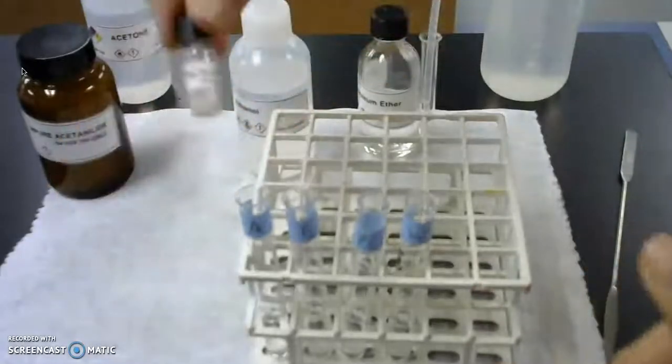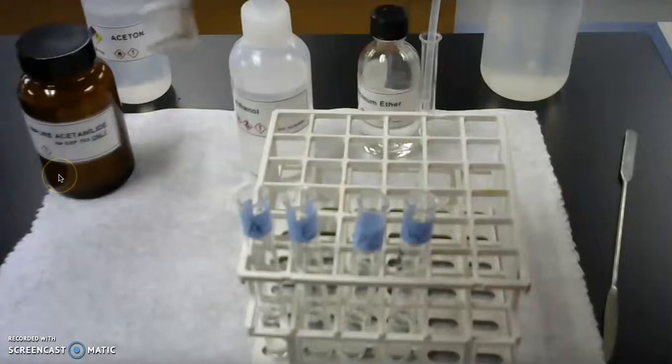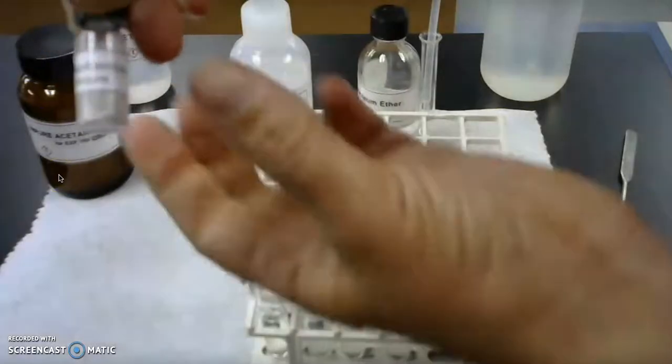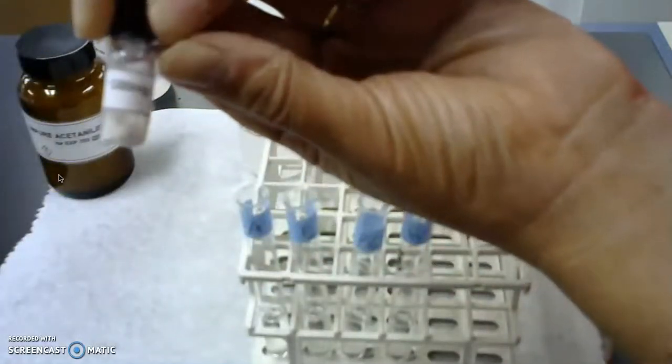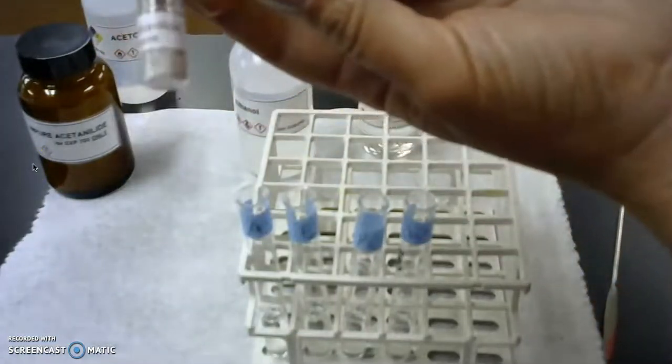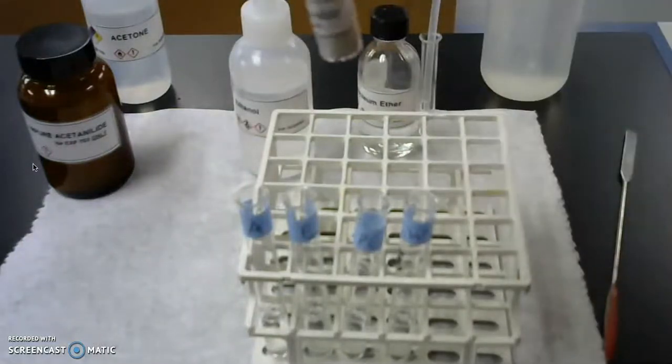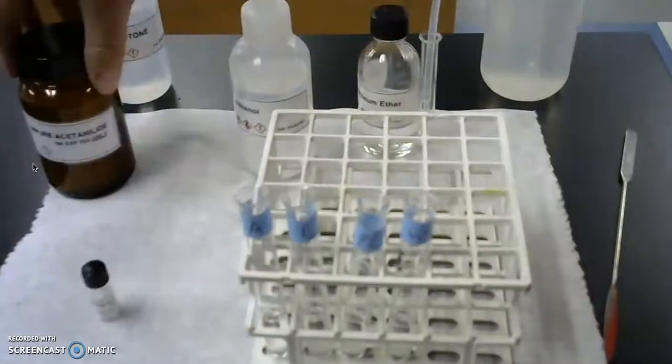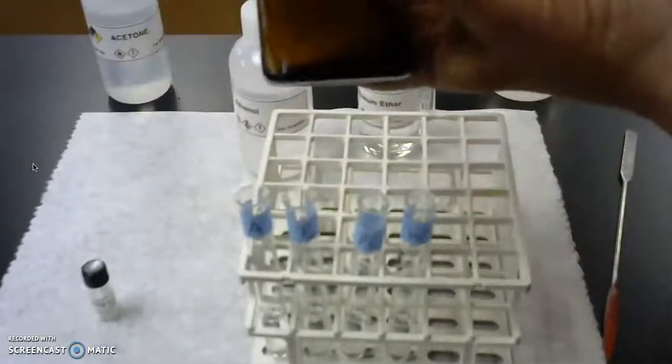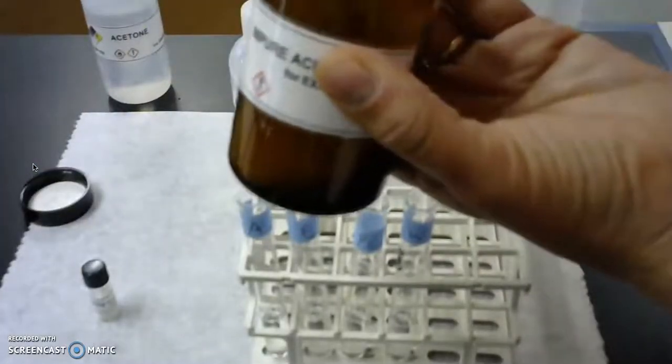Now I need to measure out my acetanilide, and I'm going to add about a hundred milligrams of acetanilide to each of the tubes. Again, it doesn't have to be exact—it's an approximation when we're trying to determine recrystallization solvents. And the amount that I'm going to use of acetanilide is about enough to cover the end of my spatula.